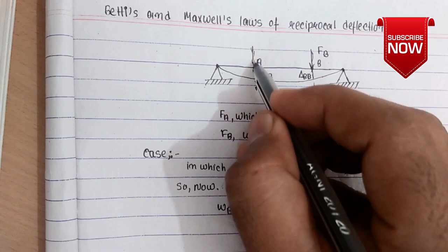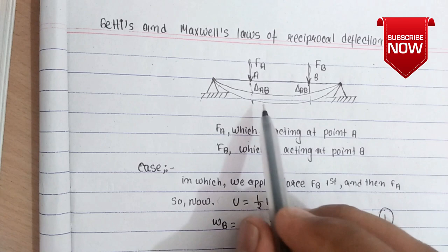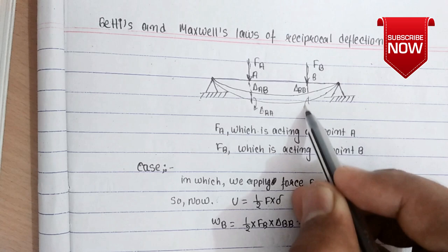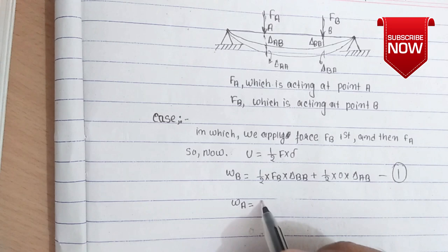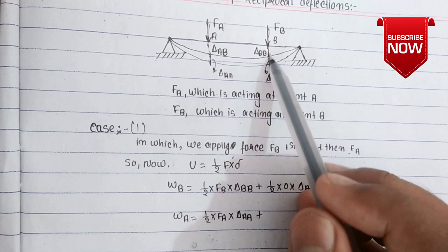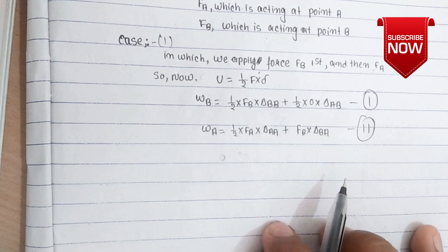Now we will apply force F_A at point A. When we apply this force, the deflection will increase by some amount — this is the additional deflection after applying F_A, giving delta A_A at point A. The work done due to force F_A is half times F_A times delta A_A. Since F_B is already acting as a constant force, the additional work done by F_B is F_B times delta B_A. This is equation two.